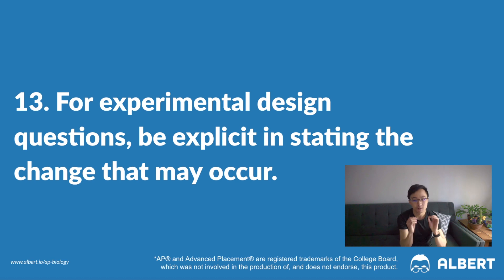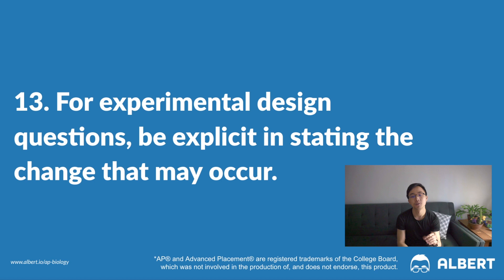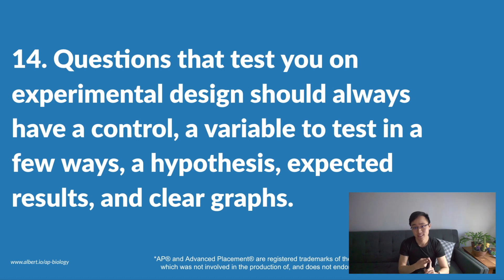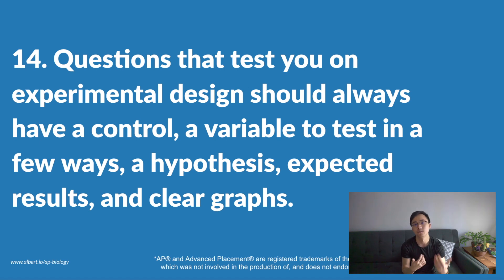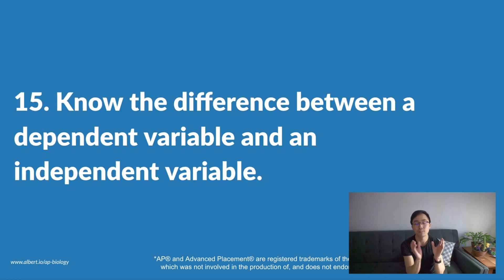Tip number 13: for experimental design questions, be very explicit when stating the change that will occur. Make direct comparisons to the control group. When you fail to explain the different parts of an experiment and how it's designed, it makes it really difficult for your reader to believe that you truly understand how to build a meaningful experiment. Tip number 14: experimental design questions should always include a control, a variable being tested in a few ways, a hypothesis, expected results, and clear graphs. Tip 15: know the difference between a dependent variable and an independent variable. There can be several independent variables, but there can only be one dependent variable in a well-constructed experiment.